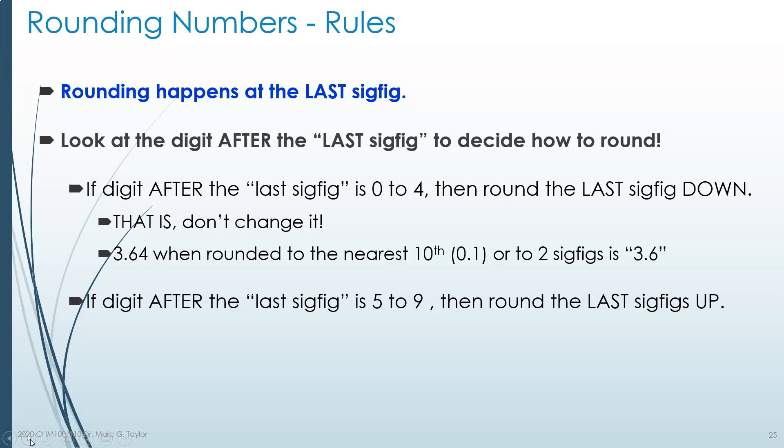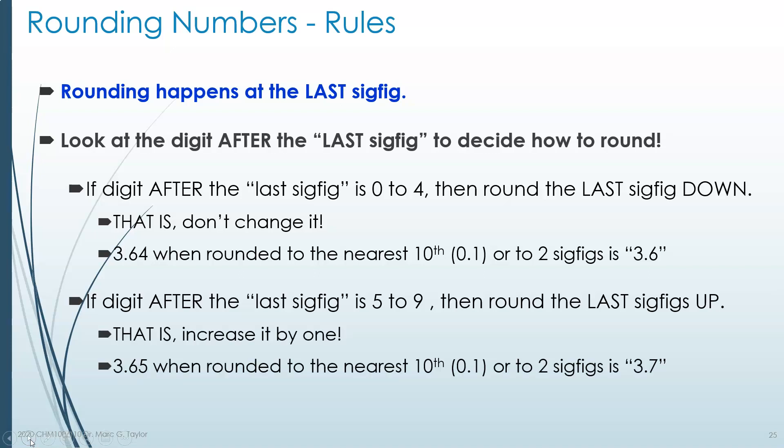If the digit after the last significant digit is 5 to 9, then we round the last significant digit up — that is, it increases by 1. So 3.65, if we're rounding to the nearest tenth, the last significant digit is the 6, and the one after it is the 5. Since 5 is between 5 and 9, that tells you to round the 6 up. Another way to say that: if asked to round 3.65 to only two significant digits, it would be rounded to 3.7.